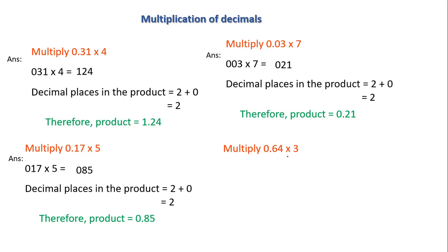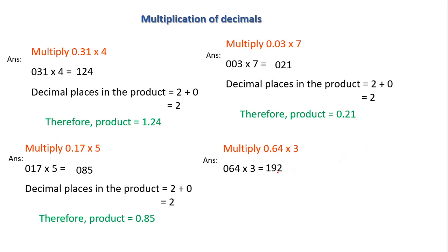Let's take one more problem: multiply 0.64 into 3. Writing without the decimal point gives 064 into 3. Finding the product: 3 into 4 is 12, write 2 carry 1; 3 into 6 is 18, plus 1 is 19, write 9 carry 1; 3 into 0 is 0, plus 1 is 1. I got 192. Now I find the number of decimal places in the given numbers.